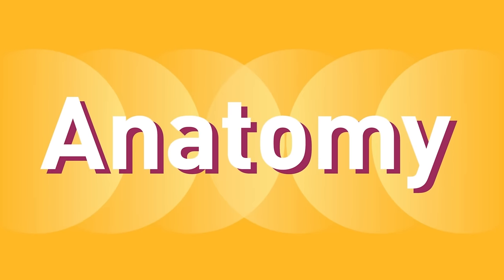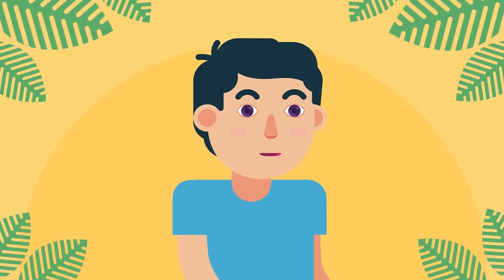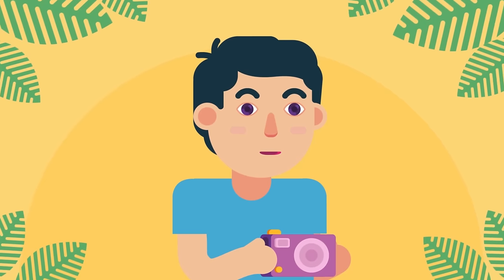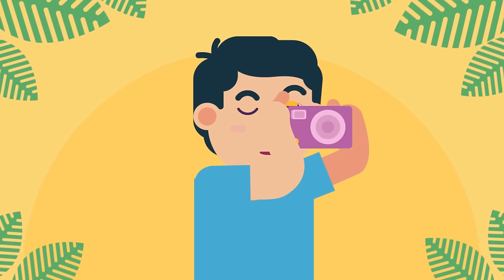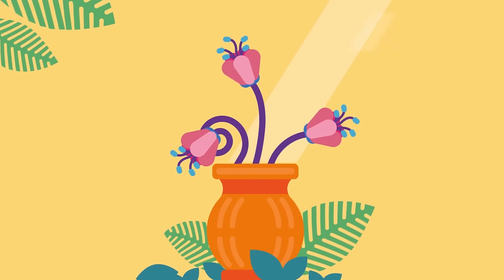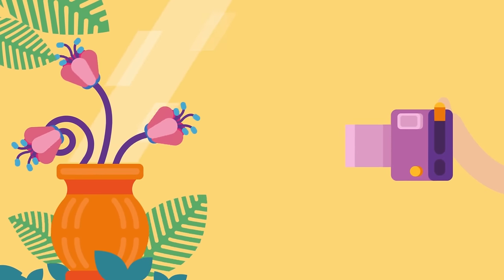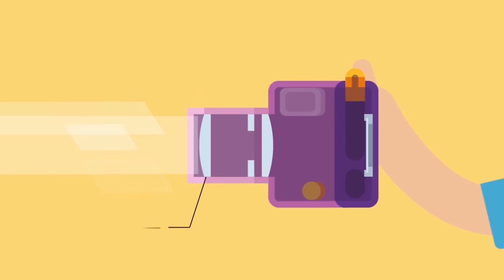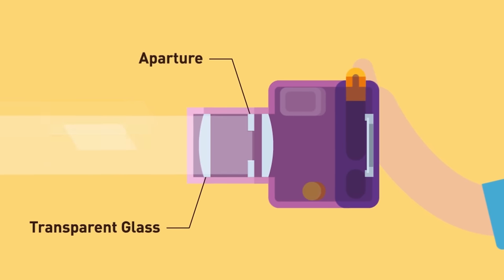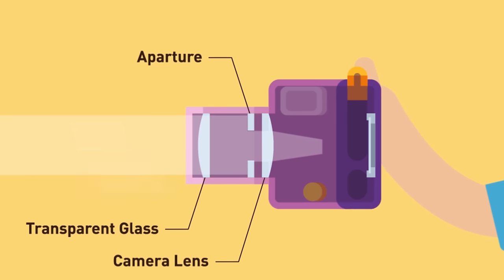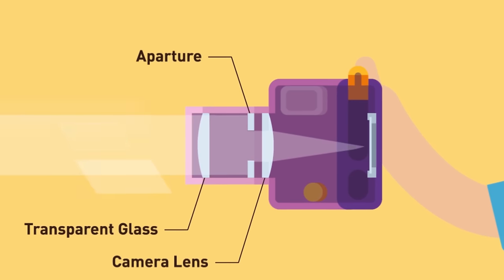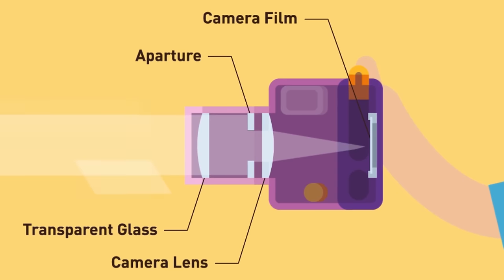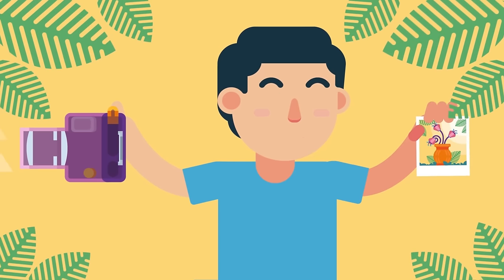Anatomy. Before we describe myopia, let's compare the eyeball to a camera for better understanding. When we take a picture, light after reflecting from an object enters the camera and passes through the following: firstly, a transparent glass in front of the aperture; secondly, a camera lens that helps in focusing light rays; and lastly, a camera film on which light is focused for a clear picture.